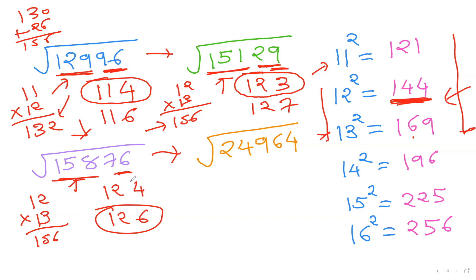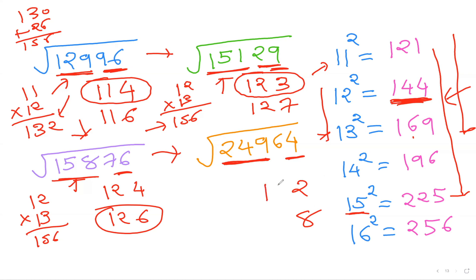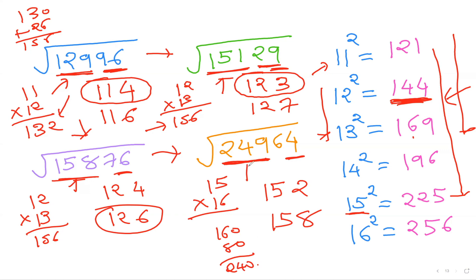Final challenge: 24964. Last digit is 4, so last digit is 2 or 8 (10 − 2 = 8). Focus on 249. 15² = 225, 16² = 256 — too big, so use 15. Possible answers: 152 or 158. Multiply 15 × 16: 16 × 10 = 160, plus 16 × 5 = 80, equals 240. Our leftover 249 is bigger than 240, so choose the bigger answer: 158. The square root of 24964 is 158.